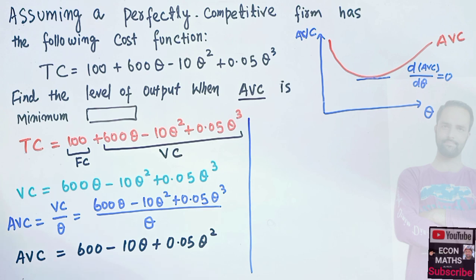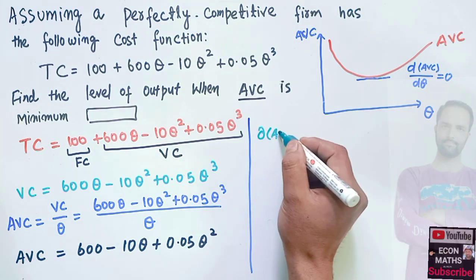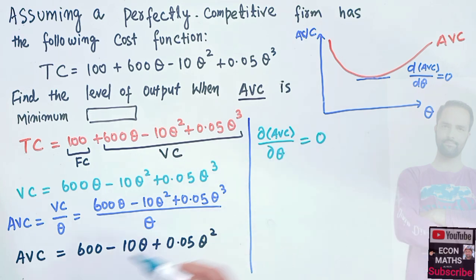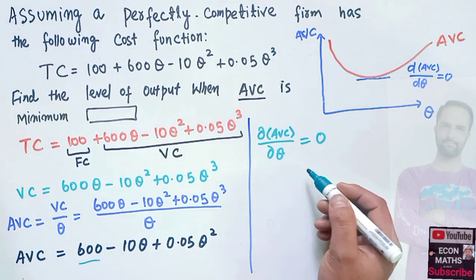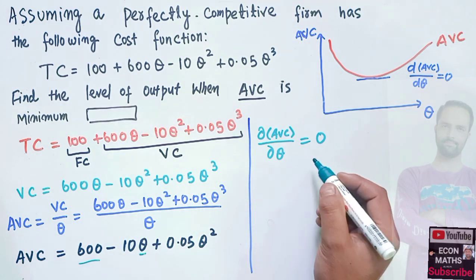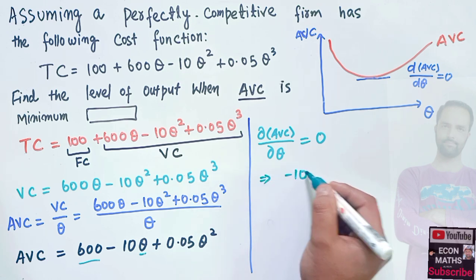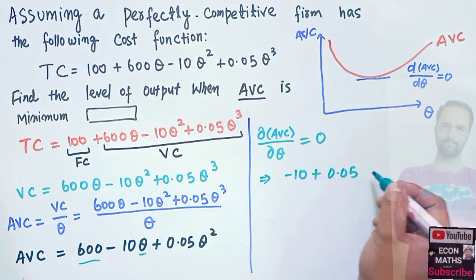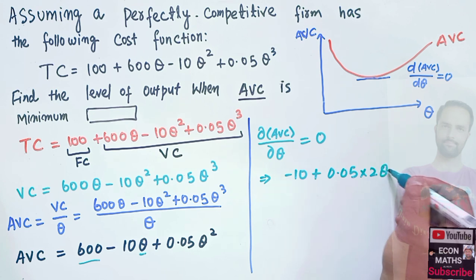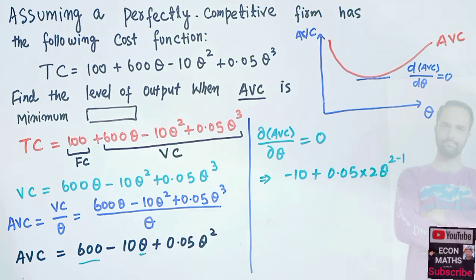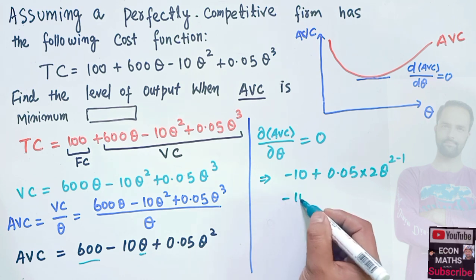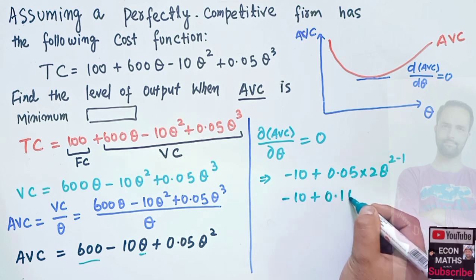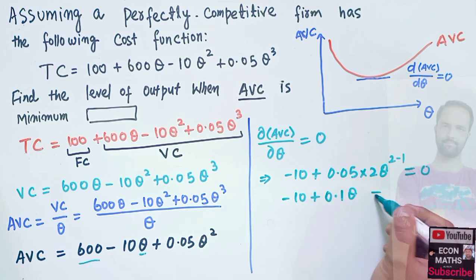We take the derivative of the AVC function with respect to output and set it equal to zero. The derivative of the constant 600 is 0. The derivative of 10q is 10. Using the power rule, the derivative of 0.05q squared is 0.1q. So we get: minus 10 plus 0.1q equals 0.